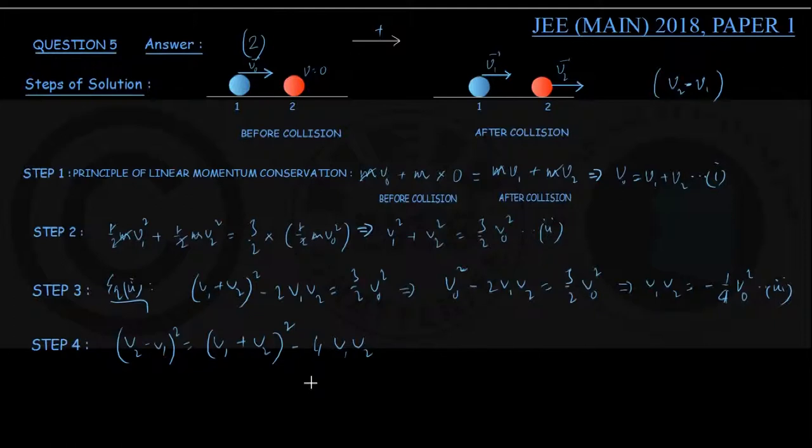Using equation 1, v1 plus v2 is v0 squared, minus 4 into v1 v2 from equation 3, which is minus 1 upon 4 v0 squared, giving 2 v0 squared. From this, (v2 minus v1) whole squared equals 2 v0 squared. Finally by square rooting, v2 minus v1 equals root 2 v0, and that is option number 2. So option 2 is the correct option.